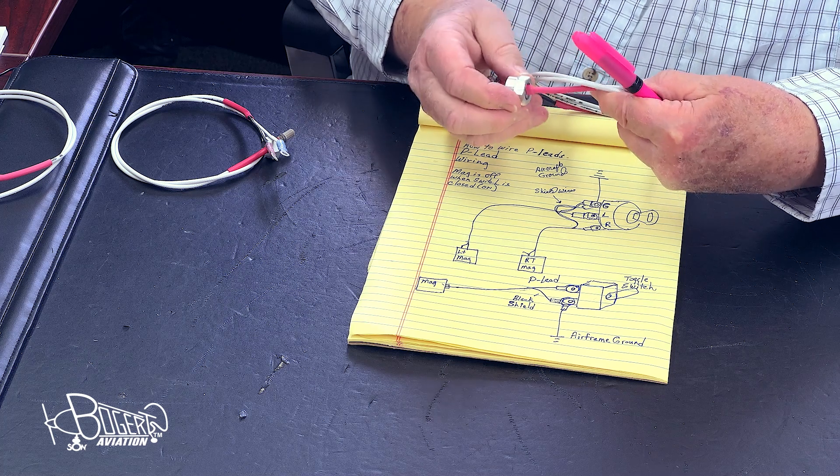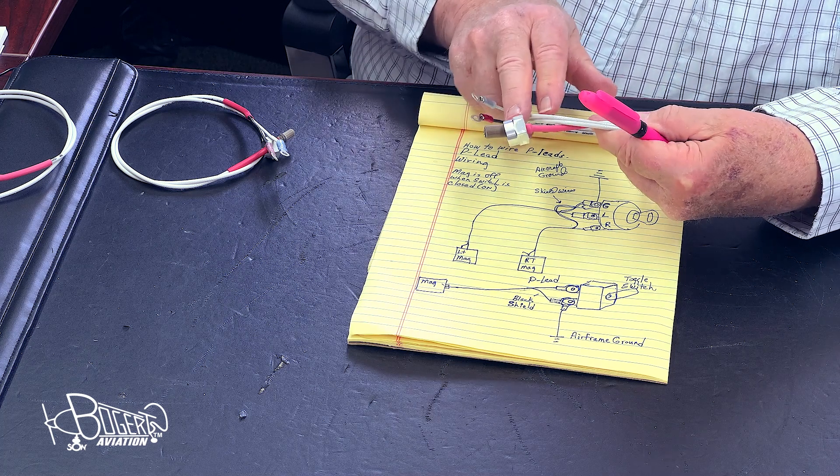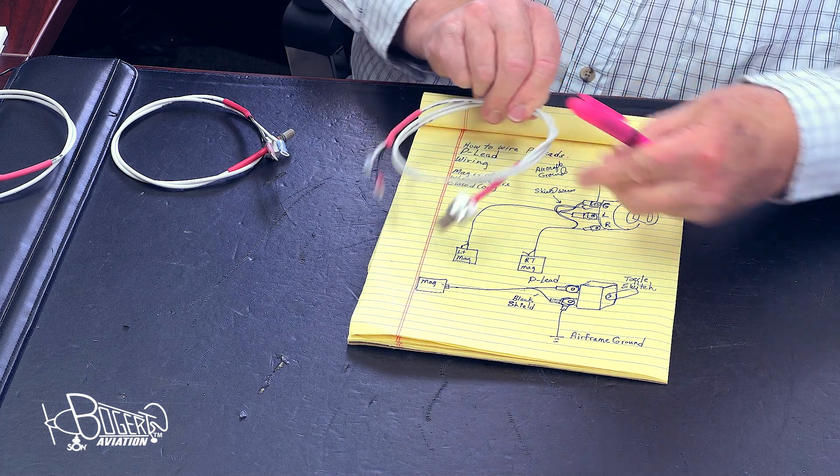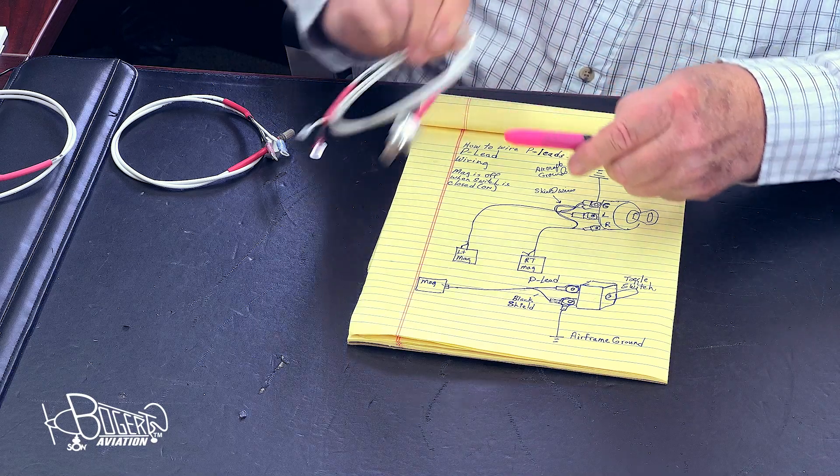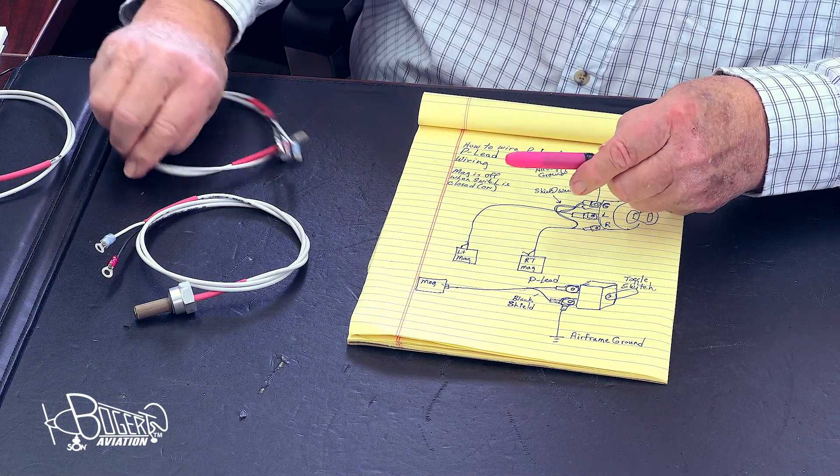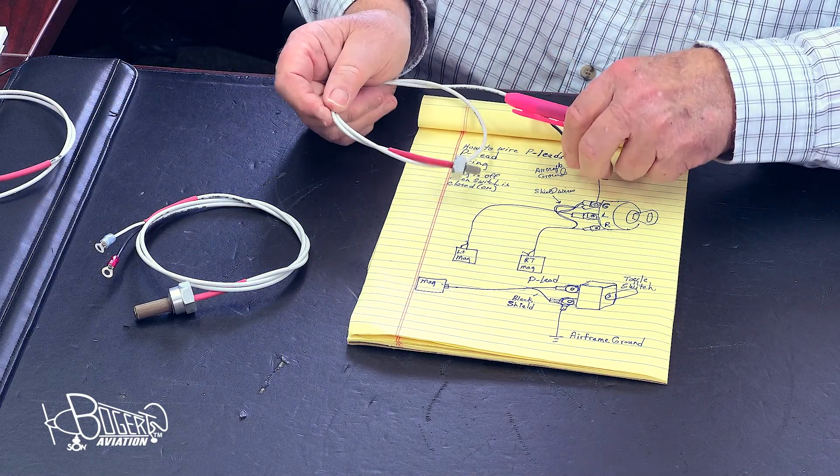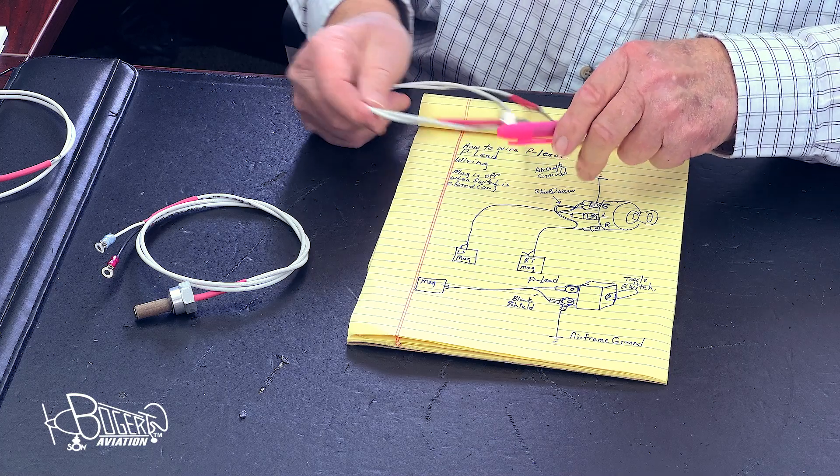If it's a Bendix 20 series magneto, you'll have a terminal like this that will screw into the magneto. Or if it's a 200 series magneto, you'll have something like this that will screw into the mag.